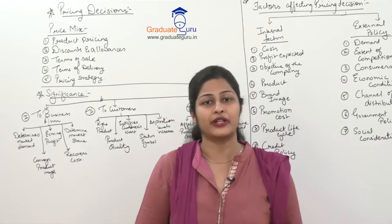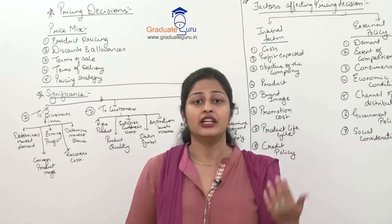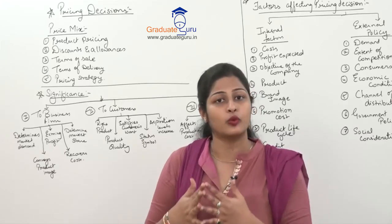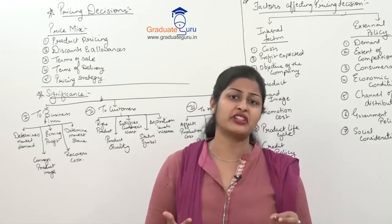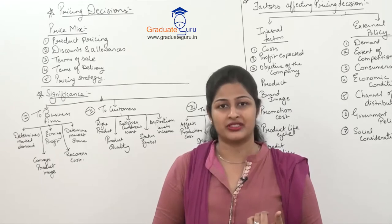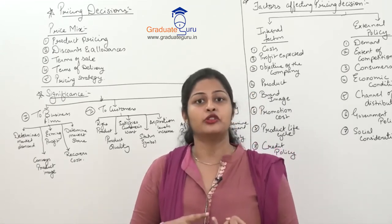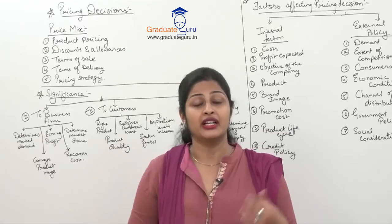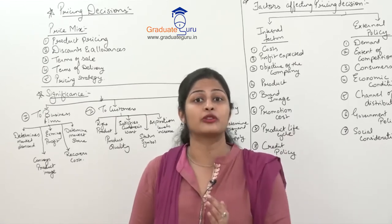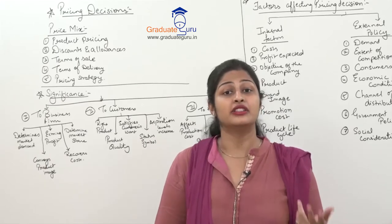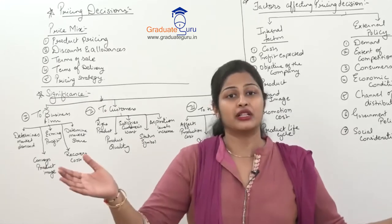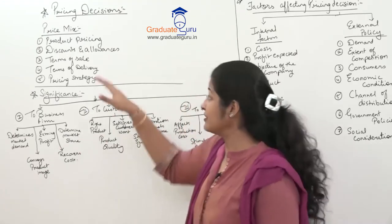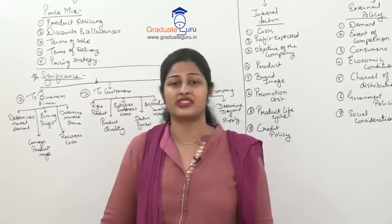The second variable is discounts and allowances — whether to offer any discounts on the product. When a wholesaler purchases from a manufacturer in bulk, they are entitled to a large discount. For example, if you buy Monaco or Bonbon biscuits from a retail shop you pay full MRP, but at Big Bazaar, D-Mart, or Metro you get a slight discount — maybe a 10-rupee item for 9 or 8 rupees. The retailer who bought in bulk received a discount from the manufacturer and passes it on to the customer.